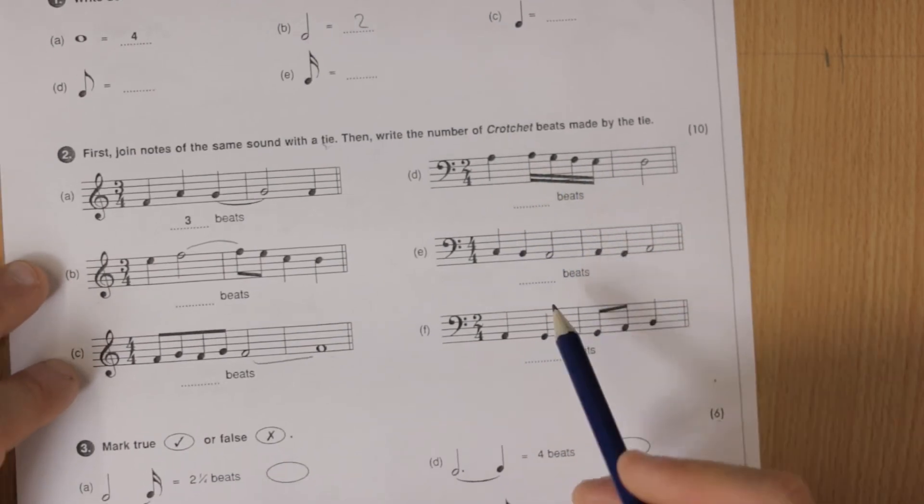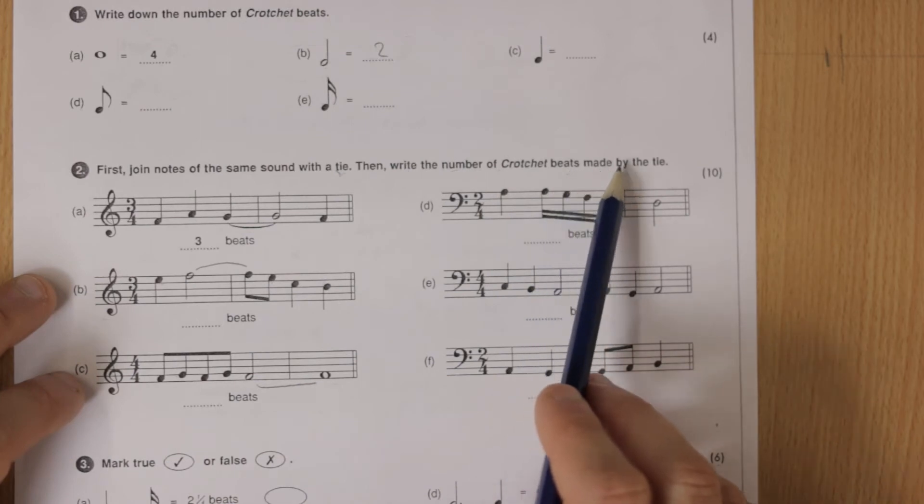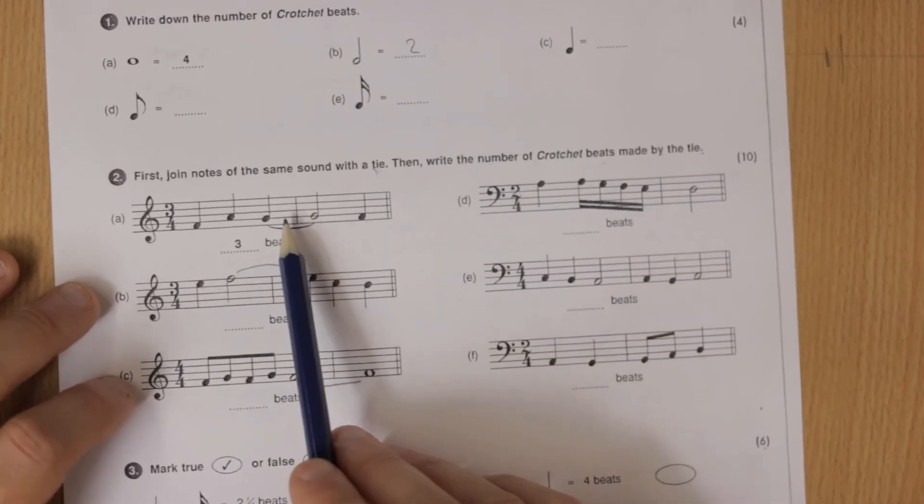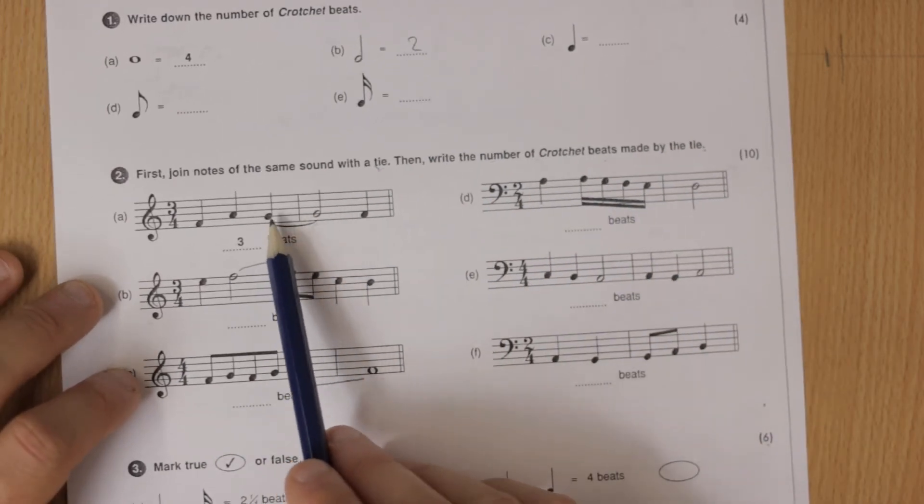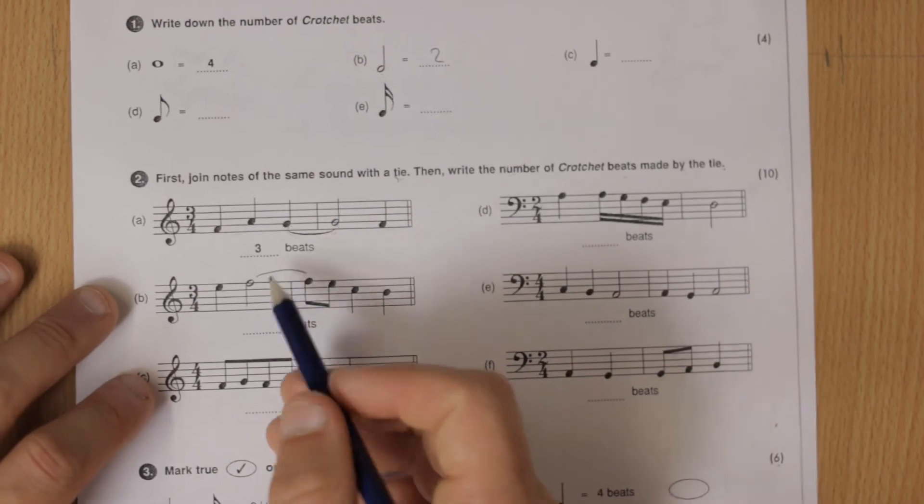You can do the rest of those but next write the number of crotchet beats made by the tie. So going back here, their tie is a crotchet to a minim so that's one plus two is three beats. I'll do this one for you.